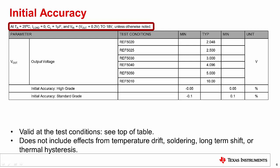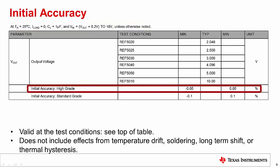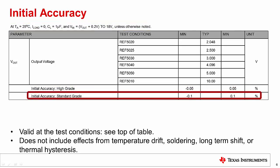Notice that some references have multiple grade outs. In this example, the high grade has 0.05% error, and the low grade has 0.1% accuracy. Note that the initial accuracy does not include the effects of accuracy shifts from soldering, long-term shifts, or hysteresis. We will discuss these error sources in a moment.